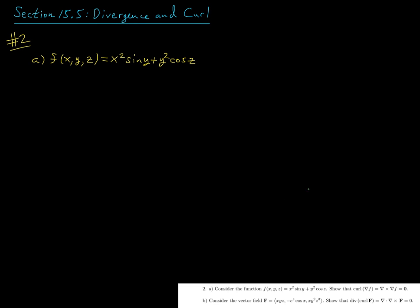Next up we'll look at question two. Part A says, consider the function f of x, y, z, which is equal to x squared sine y plus y squared cos z. Show that the curl of the gradient of the function f — written as del cross del f — is equal to zero. Notice this is a zero in bold, the zero vector, because the curl of a vector field returns another vector field.